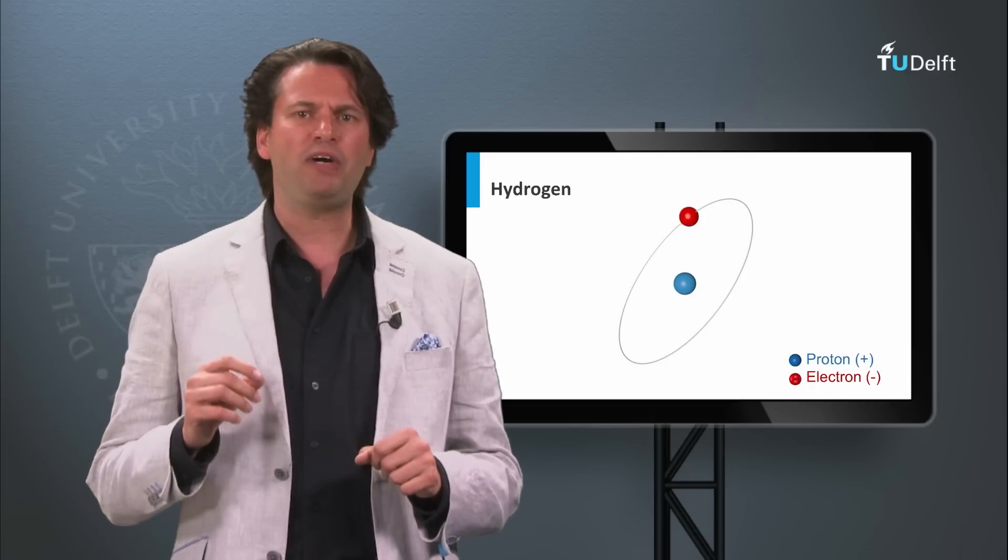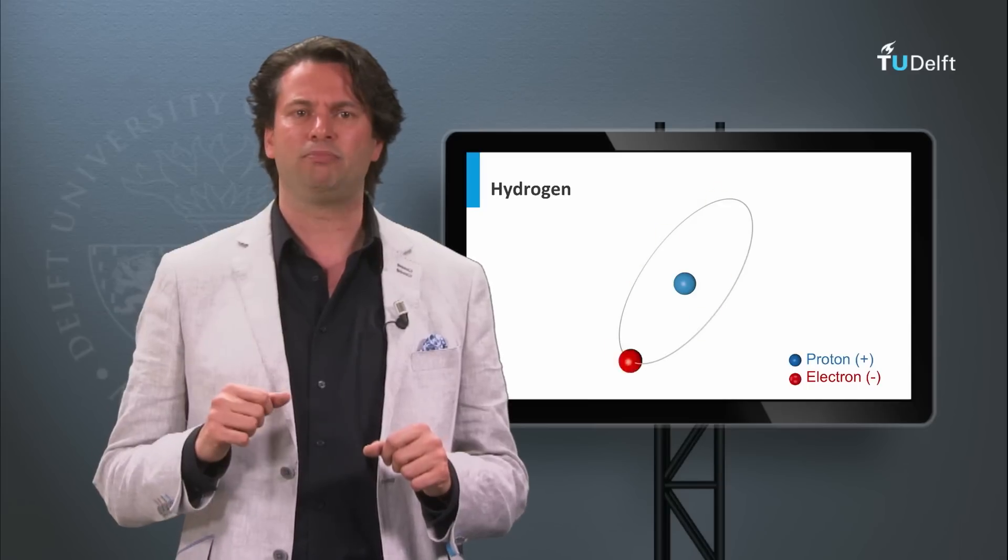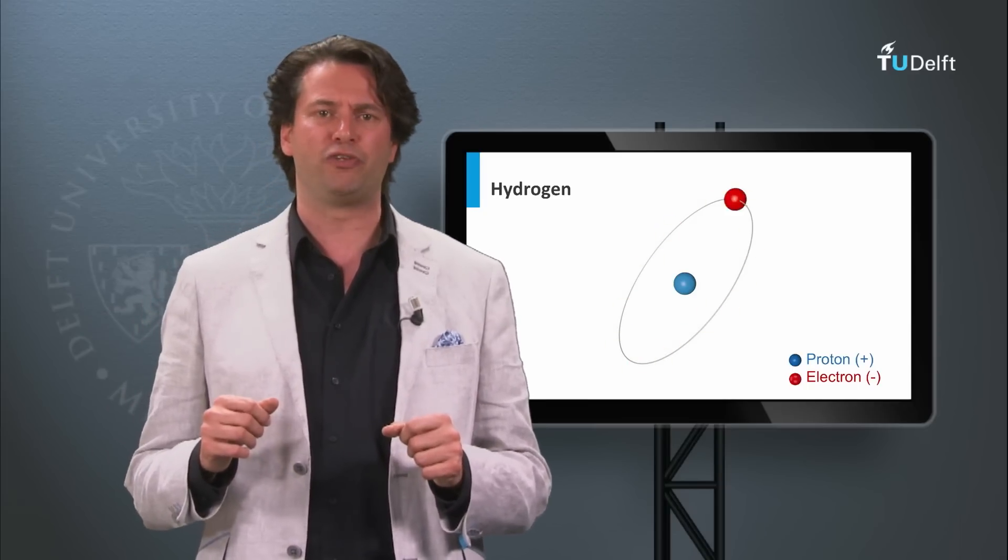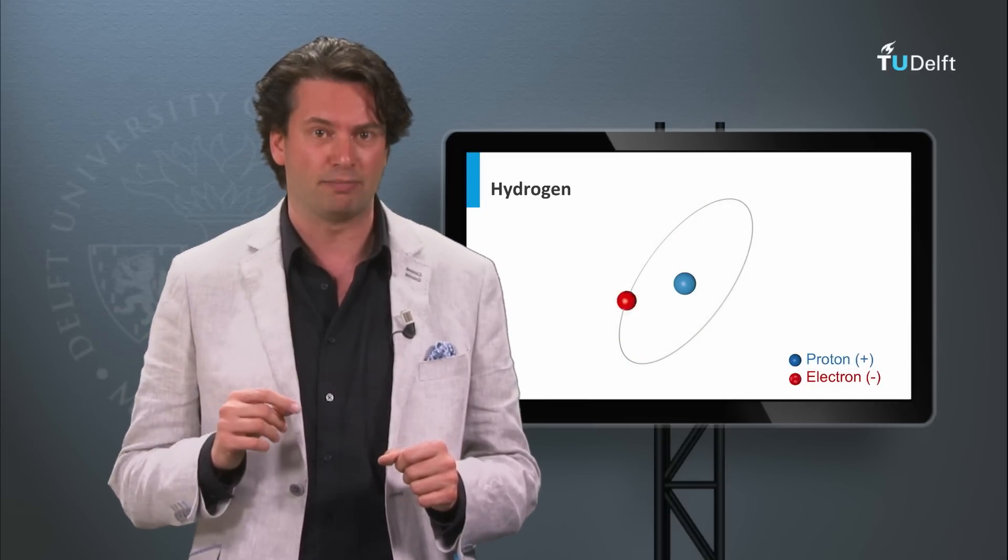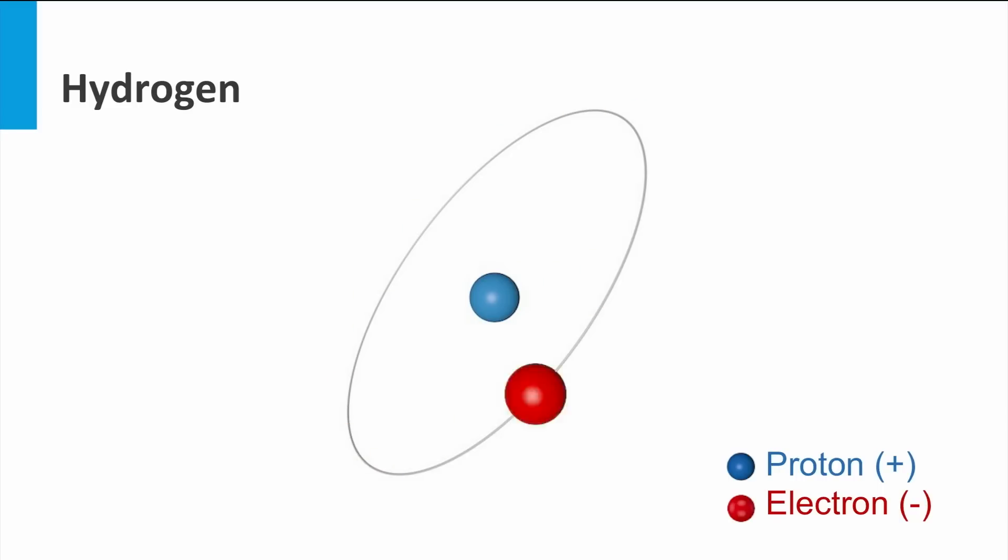Before we discuss the silicon atom, I am starting with the most simple atom in our universe, the hydrogen atom. The hydrogen atom has a nucleus consisting of one proton. The proton is positively charged. Around this proton, the much lighter electron is moving in orbits. The electron is negatively charged.